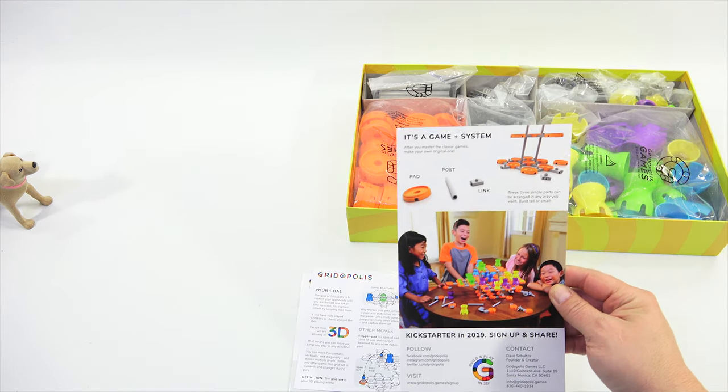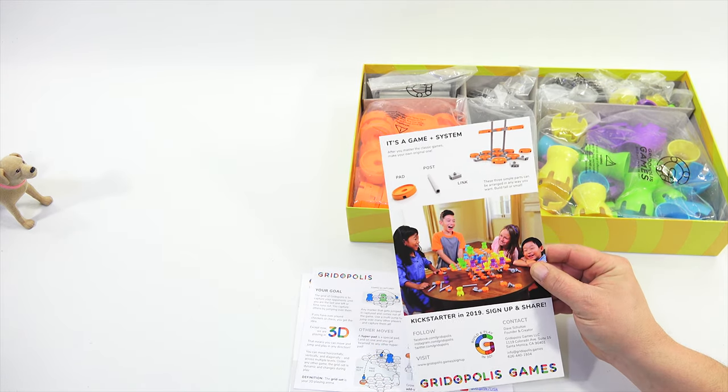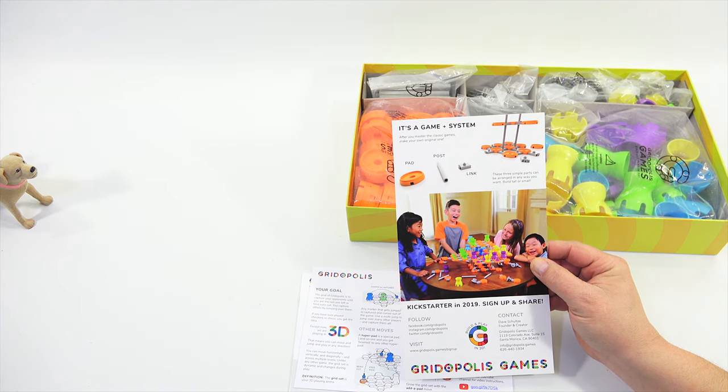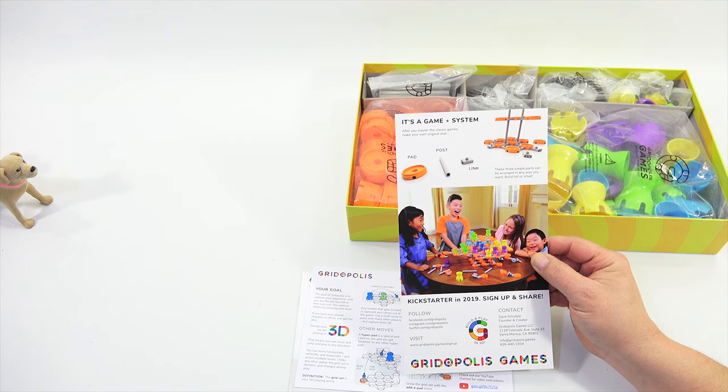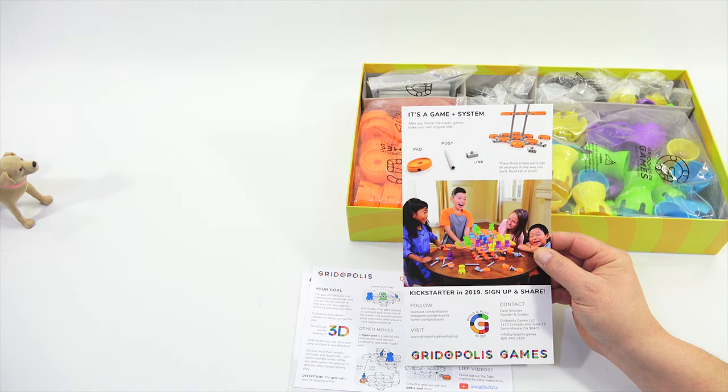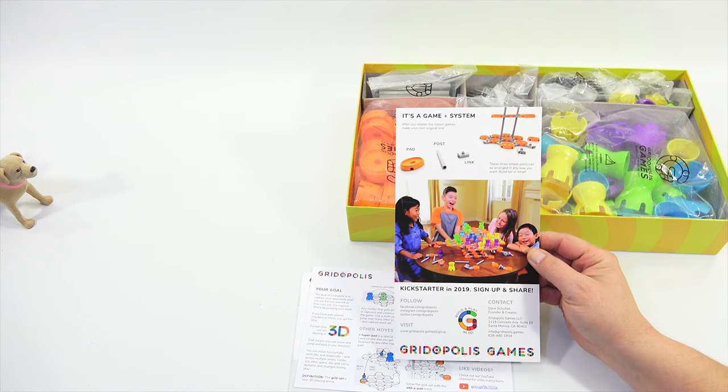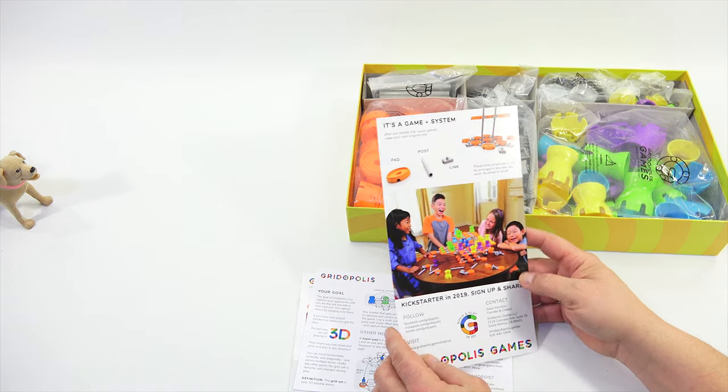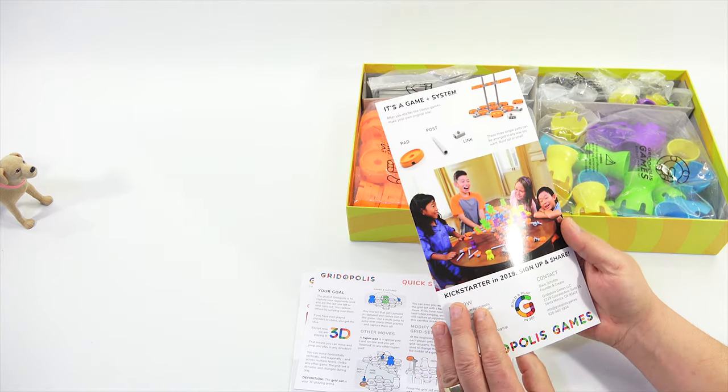All right, well, let's see, quick start guide. It's a game, plus system. Pad, post, link. Okay, you got that down. Check. Pad, post, link. Pad, post, link. Pad, post, link. Not link sausage. Okay. Not a pat of butter. Hmm. These three simple parts can be arranged in any way you want. Build tall or build small. Really? But don't build at all. No, no, that's not right.